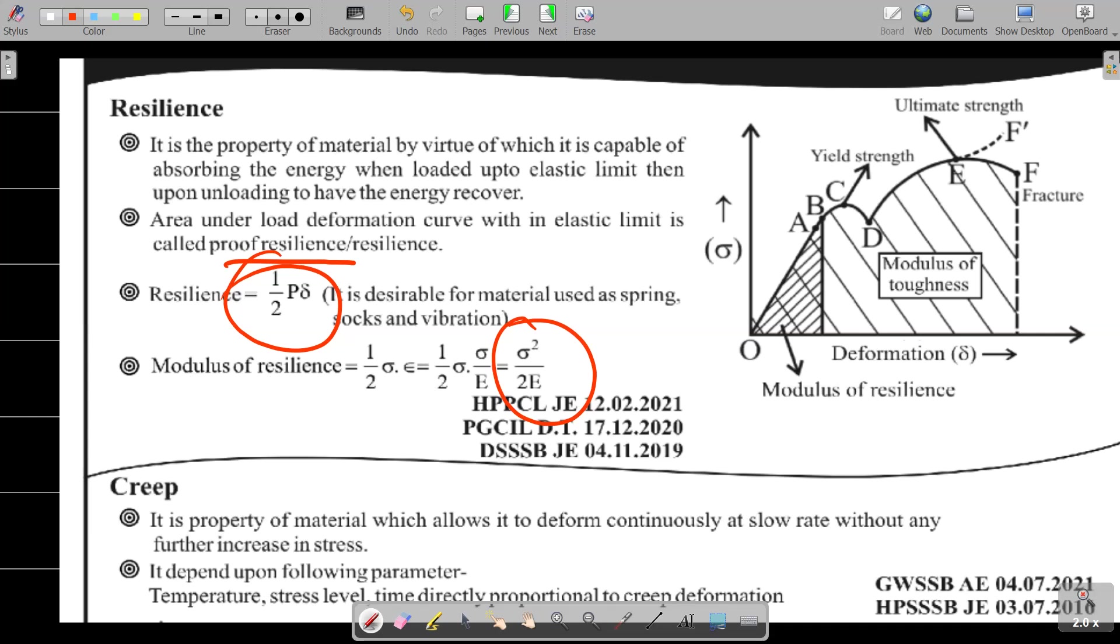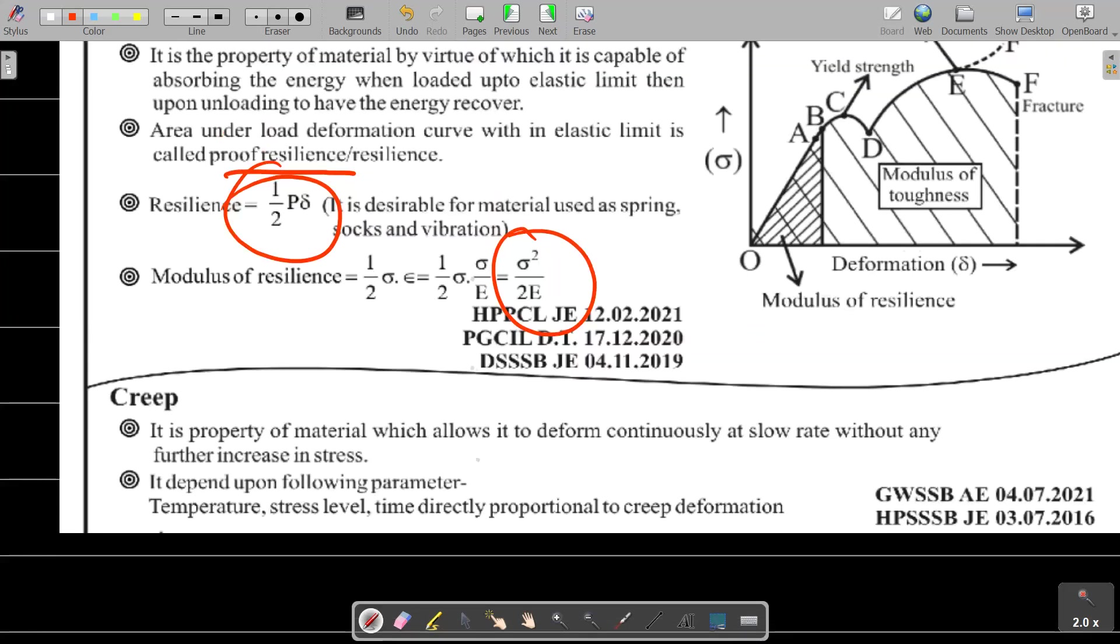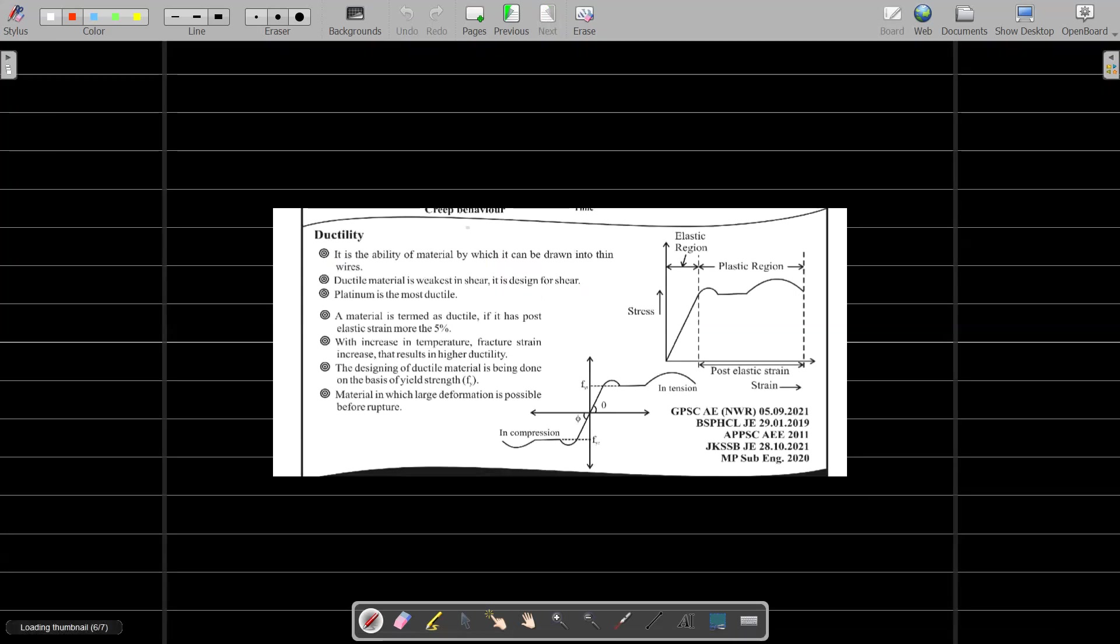Creep is the property of material by which it is allowed to deform continuously at slow rate without any further increase in stress. It depends upon temperature, stress level, and is directly proportional to time.